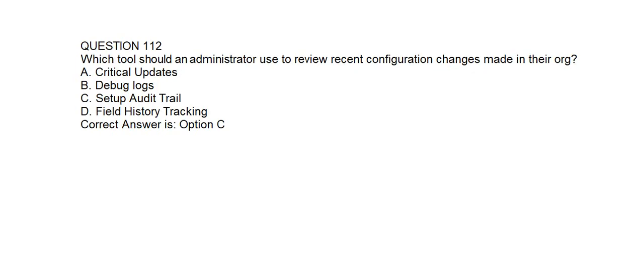Question number one hundred and twelve. Which tool should an administrator use to review recent configuration changes made in their organization? Option A: Critical Updates. Option B: Debug Logs. Option C: Setup Audit Trail. Option D: Field History Tracking. Correct answer is Option C: Setup Audit Trail.